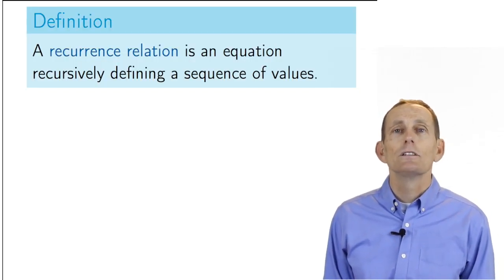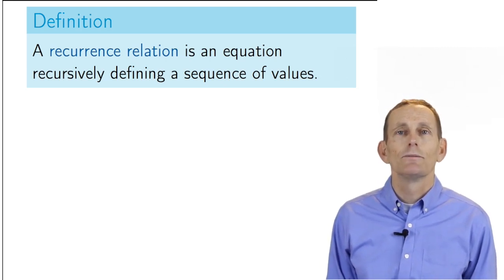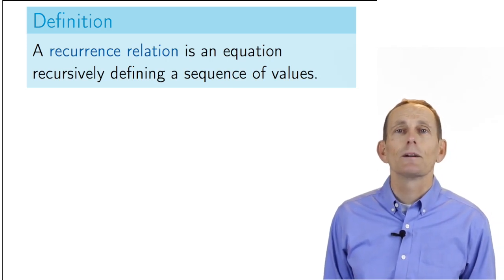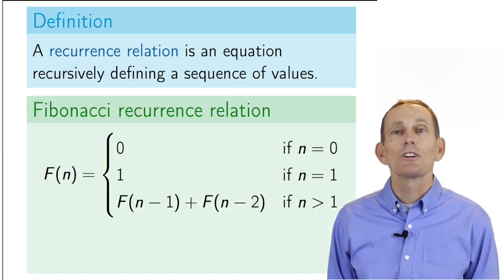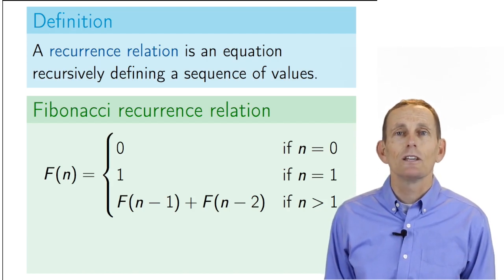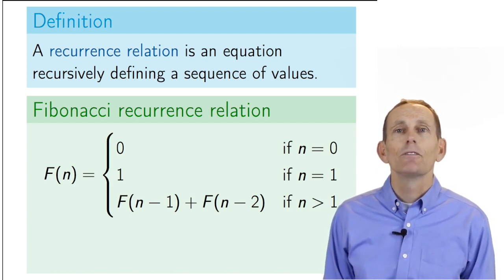In order to examine the runtime of a recursive algorithm, it's often useful to define the time that the algorithm takes in the form of a recurrence relation. A recurrence relation defines a sequence of values in terms of a recursive formula. The example here shows the recursive definition of the values in the Fibonacci sequence. You can see that we define the value for the nth Fibonacci as the sum of the preceding two values. As with any recursive definition, we'll need one or more base cases. Here, we define base cases when evaluating F of 0 and F of 1.